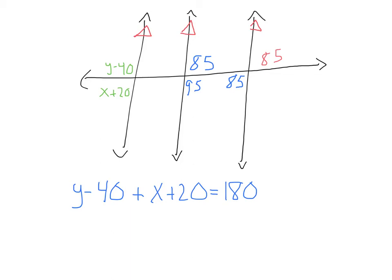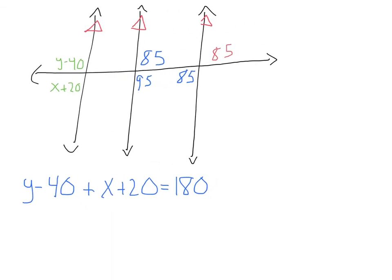All right, now that I've filled in some of my other angles here, I see some different relationships. Now I have an alternate exterior between y minus 40 and 95. So I know those need to be equal to one another. I'm going to set that up. Y minus 40 equals 95. And solving for that, I'm going to get y equals 135.